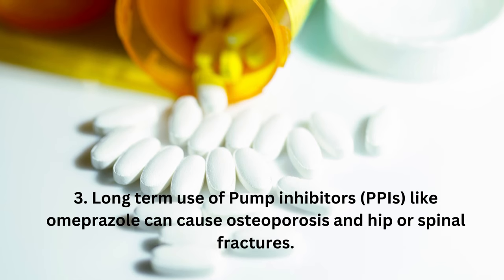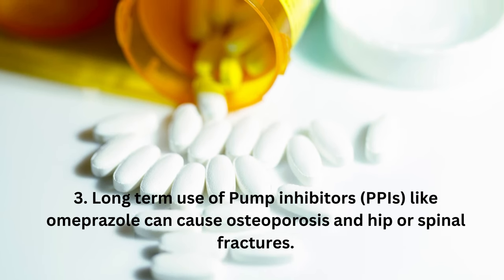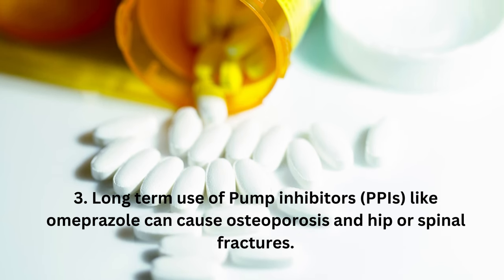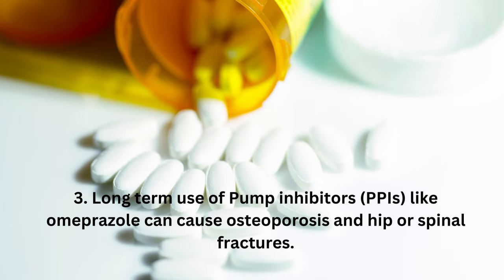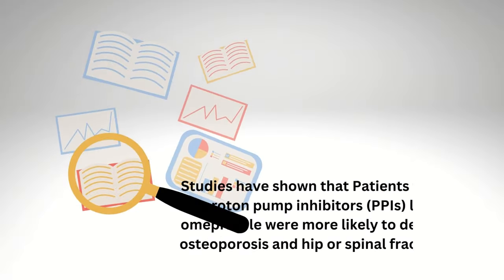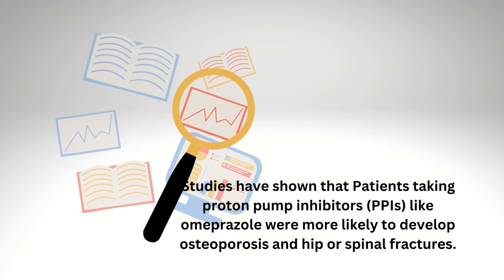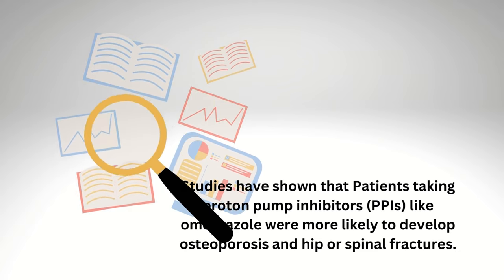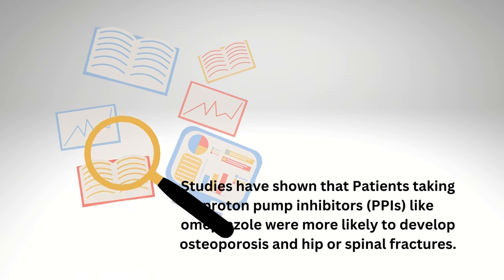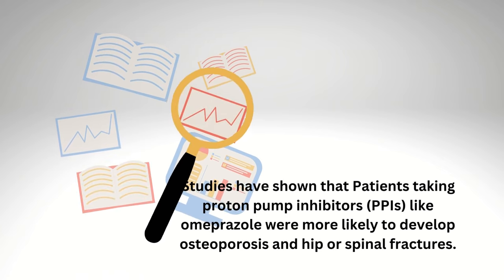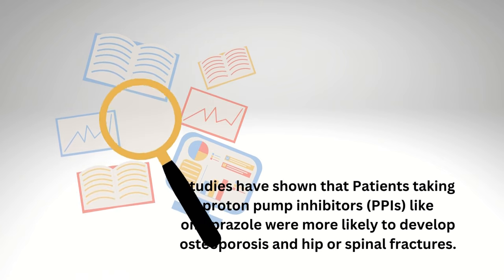Third, taking proton pump inhibitors and H2 blockers such as omeprazole and esomeprazole. These medications block acids in your gut and provide relief, but can also reduce calcium absorption, which is essential for bone formation. Studies have shown that patients taking proton pump inhibitors (PPIs) like omeprazole were more likely to develop osteoporosis and hip or spinal fractures.